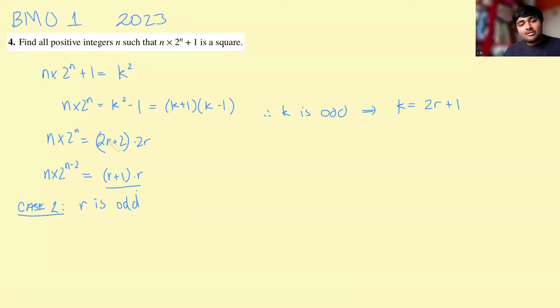So in this case, if r is odd, that means that r plus 1 is even in this expression here. And so therefore, again, since the left hand side is a multiple of 2 to the n minus 2, which is even, we must have that coming from r plus 1. So we can say that r plus 1 here must be a multiple of 2 to the n minus 2.